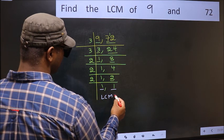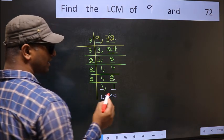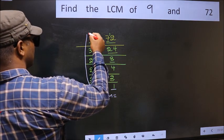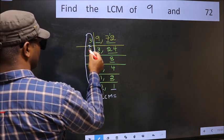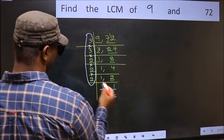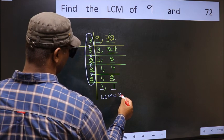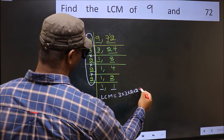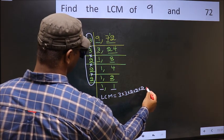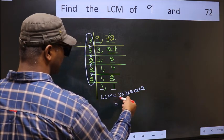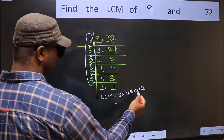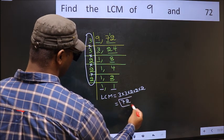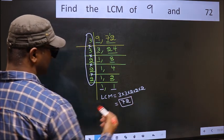So our LCM is the product of these numbers: 3 times 3 times 2 times 2 times 2 times 2. When we multiply these numbers, we get 72. So 72 is our LCM.